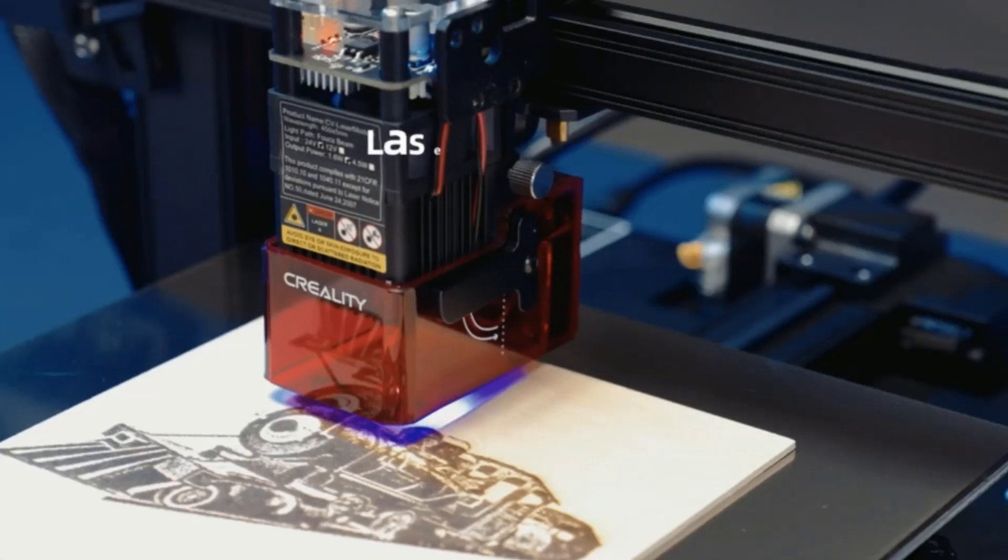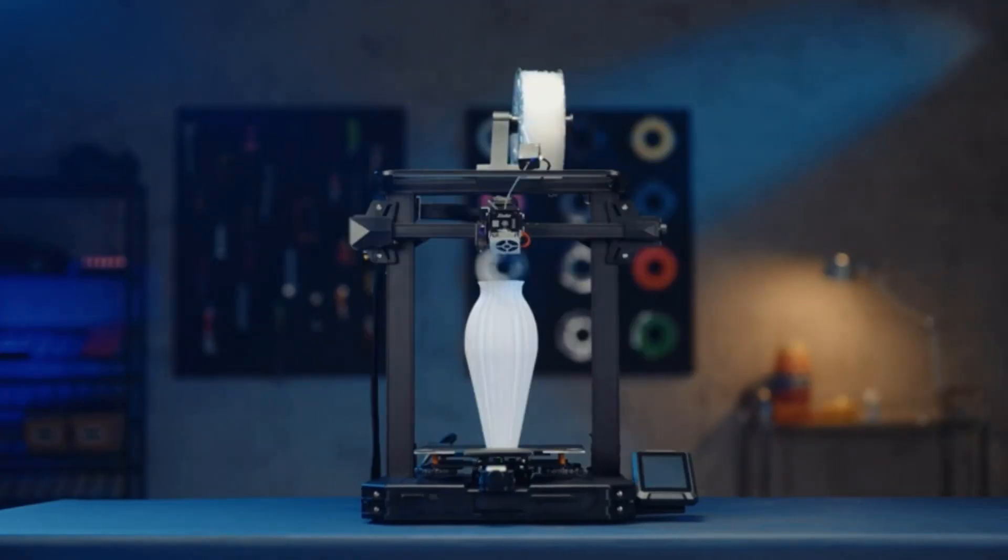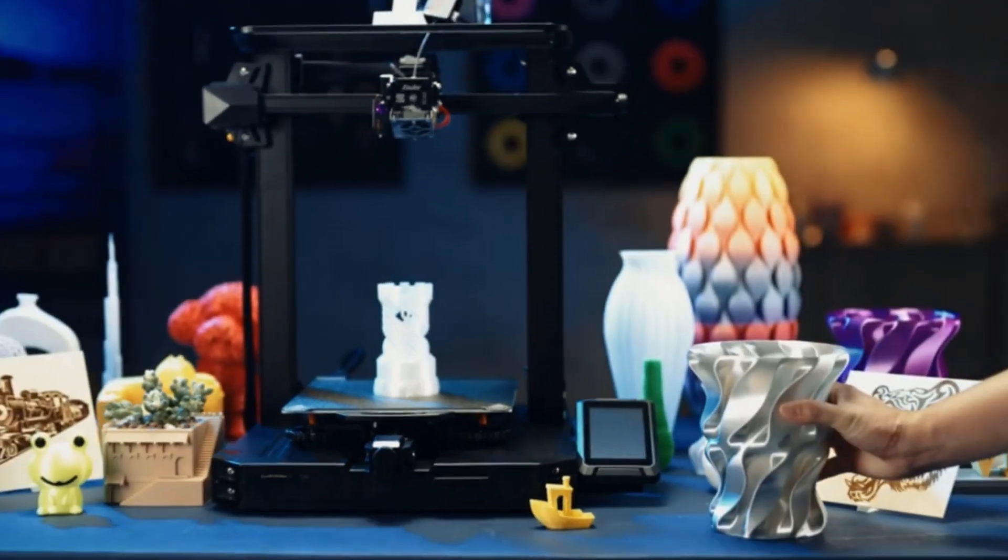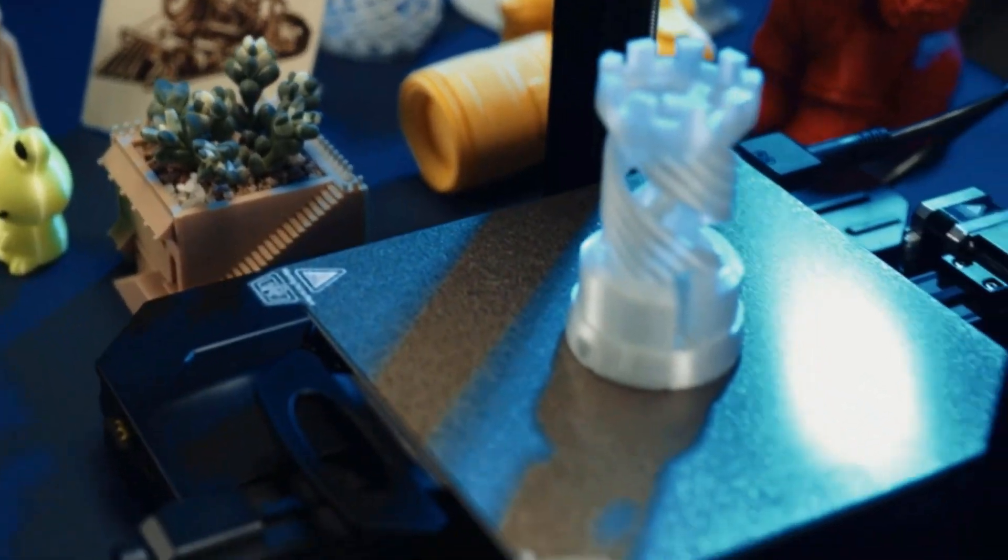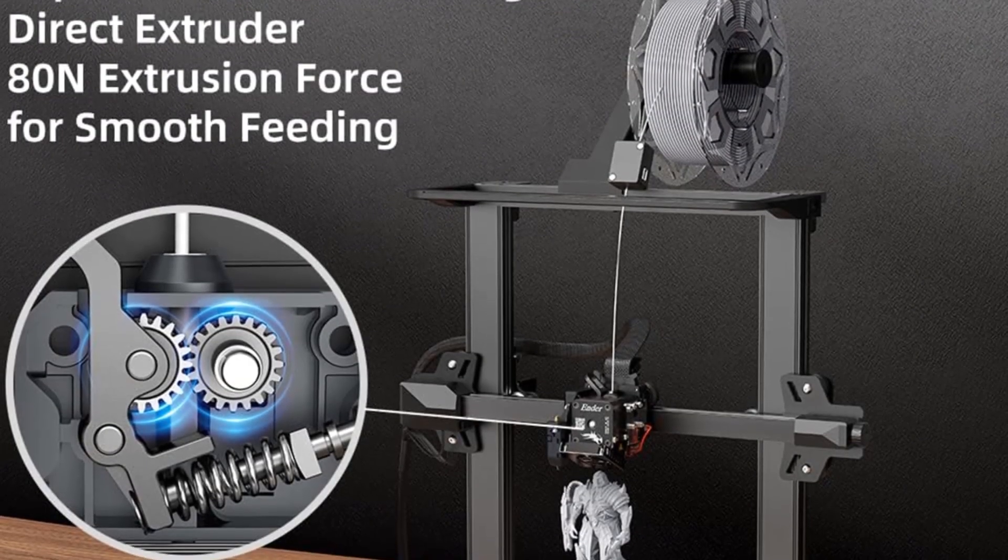300 degrees Celsius high-temp nozzle: the brand new nozzle made of brass can stand up to 300 degrees Celsius printing temperature, and it is compatible with multiple filaments, such as PLA, ABS, PVA, wood, TPU, PETG, and PA, providing more possibilities for creation.